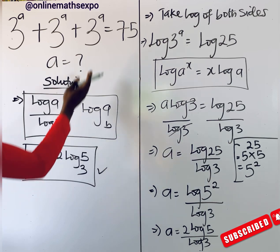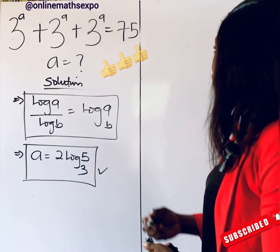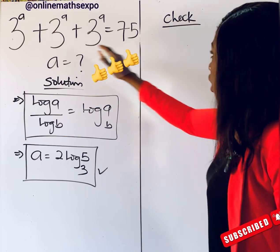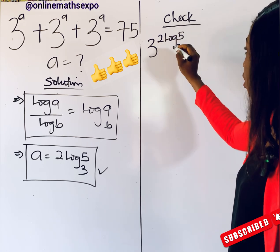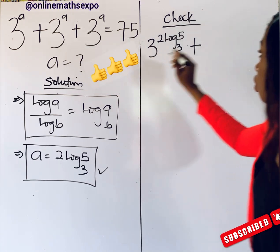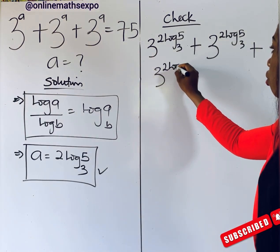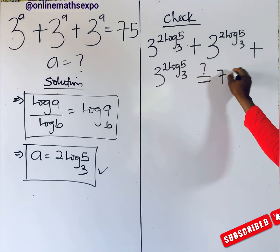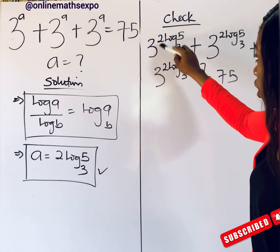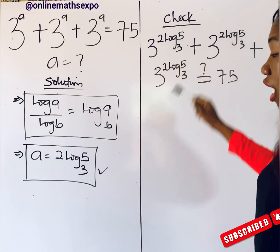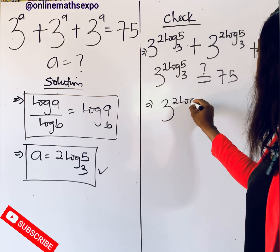Now we are going to plug this value of a back into the left side of the equation to see if it gives us 75. To check: we have 3 to the power of a, where our a is 2·log₃(5). So the expression becomes 3^(2·log₃5) plus 3^(2·log₃5) plus 3^(2·log₃5). Since these are all the same repeated term, we just need to evaluate one of them.